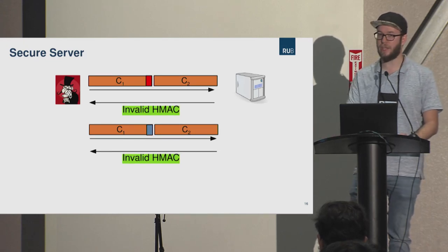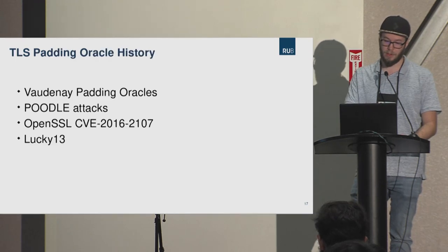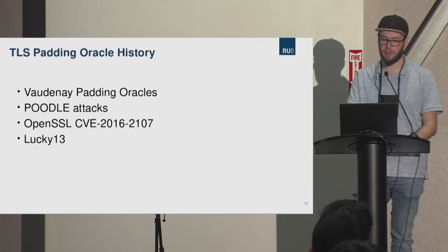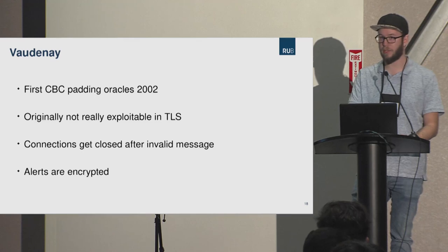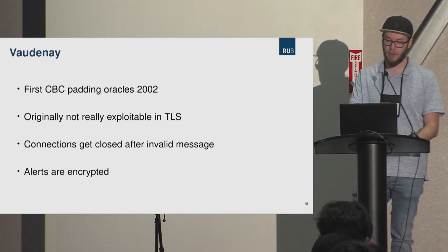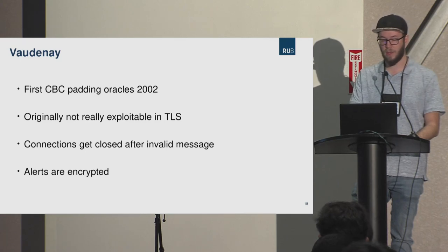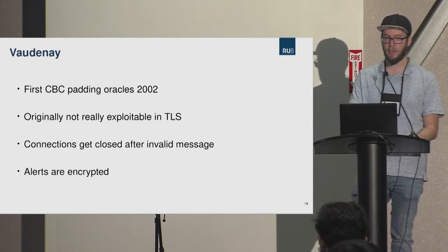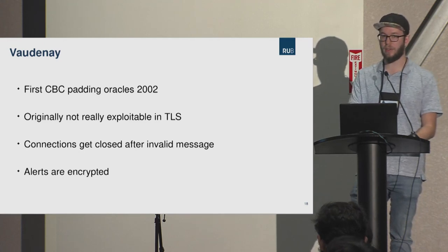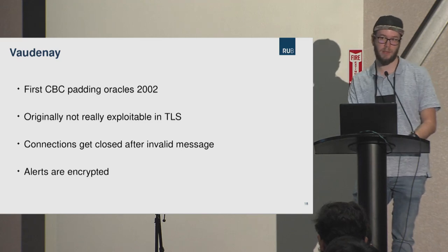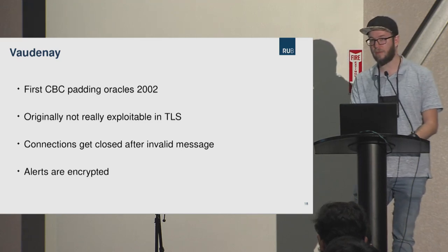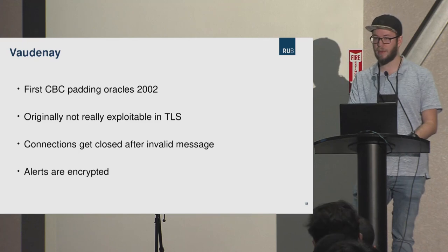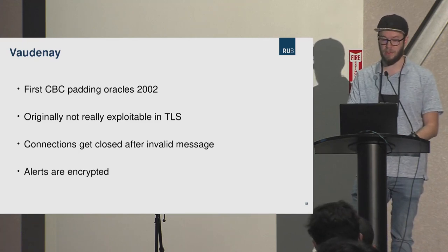This is actually an implementation vulnerability, not a vulnerability in the TLS standard. There have been quite a few padding oracles in TLS history. The first is the Vaudenay padding oracle attack, the first padding oracle attack on CBC mode, discovered in 2002. It wasn't originally exploitable in TLS because when you receive an error like an invalid HMAC, the connection is closed, and additionally the error messages are encrypted so you can't tell which error you actually got. Later improvements used timing to deduce different error states.